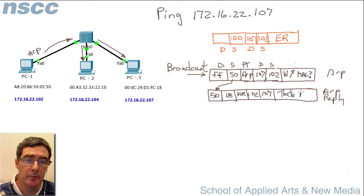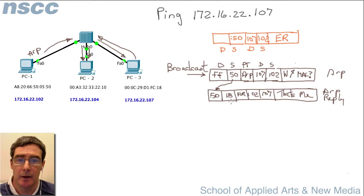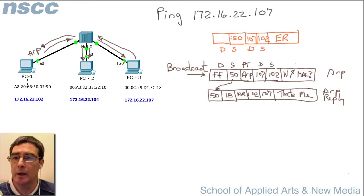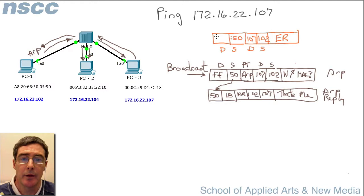The ARP reply comes back. Even though it passes through the hub and reaches PC2, it's now a directed frame — not a broadcast — so PC2 ignores it because the destination address is not its own. The ARP reply reaches PC1. Now PC1 knows the MAC layer address it needs to send to, so it can continue to complete the frame for the echo request.